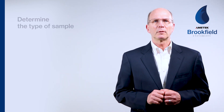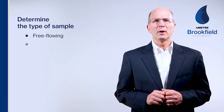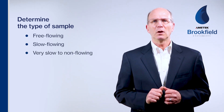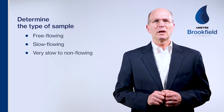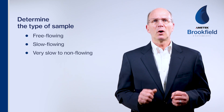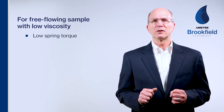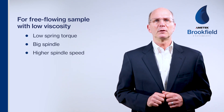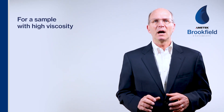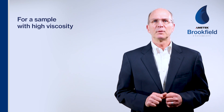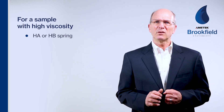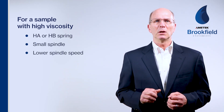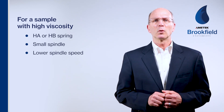You can determine the type of sample with this simple technique — just check how it flows. Is the sample free-flowing, slow-flowing, or very slow to non-flowing? If the sample is free-flowing with low viscosity, I recommend using a viscometer with a low spring torque, big spindle, and higher spindle speed. The opposite applies to a highly viscous liquid sample. For these, a stiffer HA or HB spring, smaller spindle, and lower spindle rotation speed are recommended.